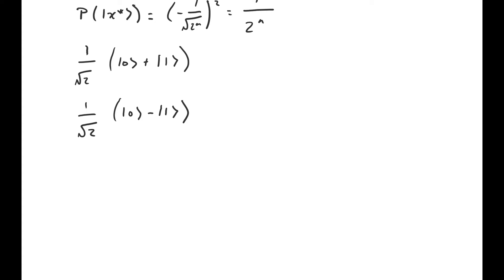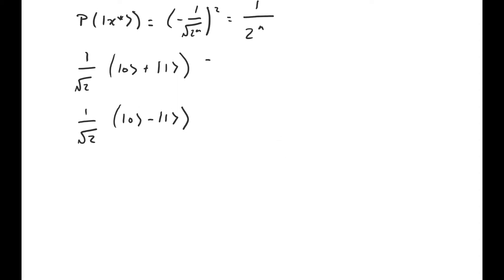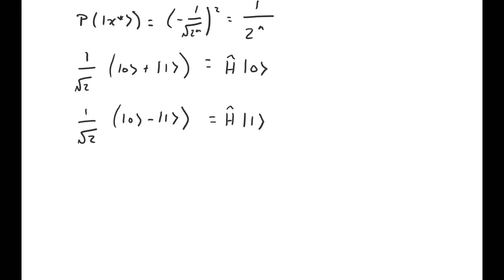If you were paying attention to the video on quantum gates, you'll recognize that the first state, the uniform superposition, can be written as the Hadamard gate acting on the basis state |0⟩, because the Hadamard gate creates the uniform superposition when it acts on |0⟩. And the second state is actually the Hadamard gate acting on the state |1⟩. Now, the Hadamard gate is its own inverse, so applying it twice is the same as doing nothing. So if we apply the Hadamard gate to the first state, the result is just the basis vector |0⟩, and if we apply it to the second state, the result is the basis vector |1⟩.